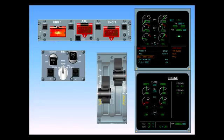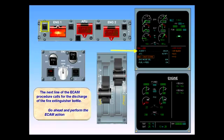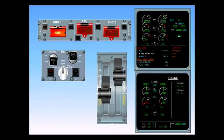The next line of the ECAM procedure calls for the discharge of the fire extinguisher bottle. Go ahead and perform the ECAM action. The discharge light illuminates on the agent one push-button. This means that the fire extinguisher bottle is depressurized.